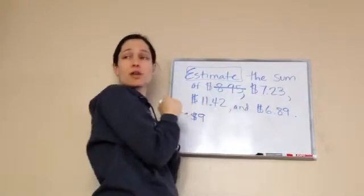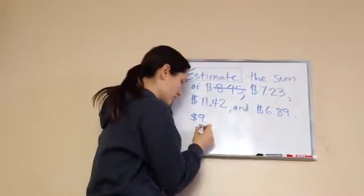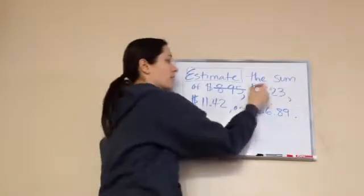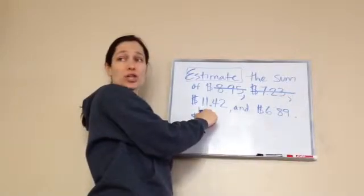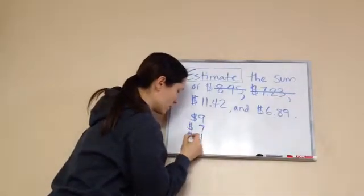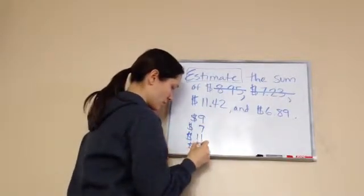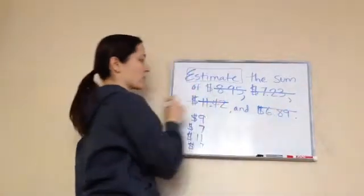Now, let's work with $7.23. Okay. What's $7? $7.00. Okay. $11.42. $11.00. $11.00. And $6.00. And... I mean $7.00. $7.00. Okay. So, we estimated all of those.